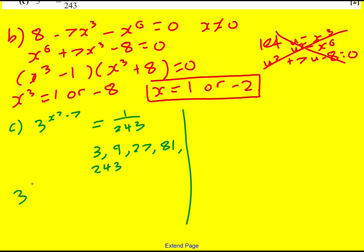Which means we can straight away write 3 to the power of x squared minus 7 is equal to 1 over 3 to the 5 or 3 to the minus 5. Now because the powers are the same it must be that x squared minus 7 is equal to minus 5.